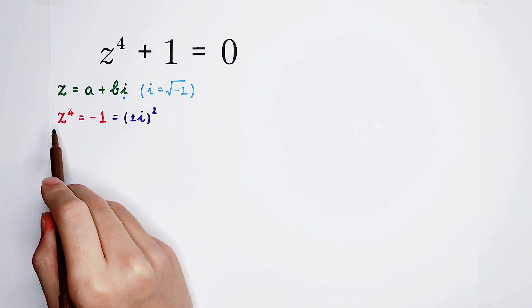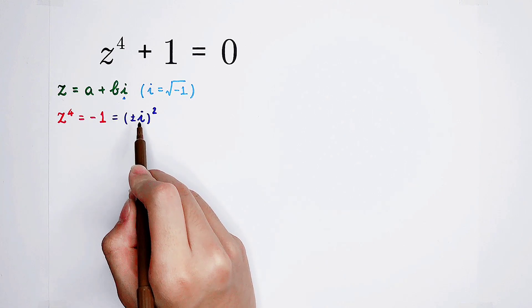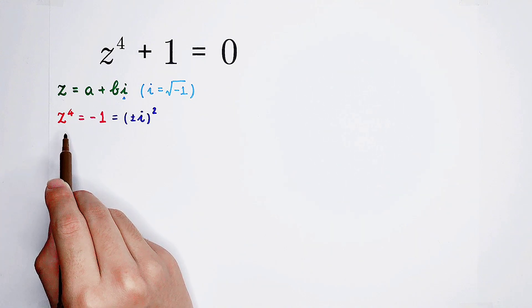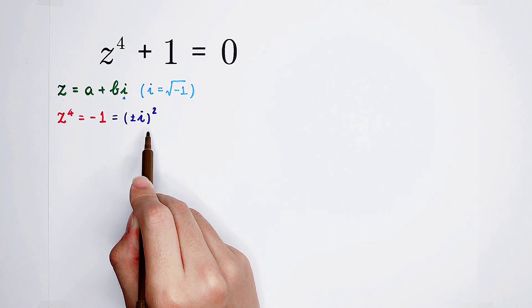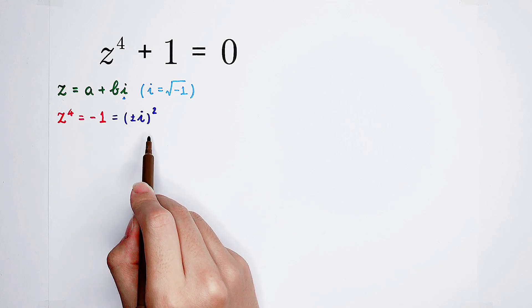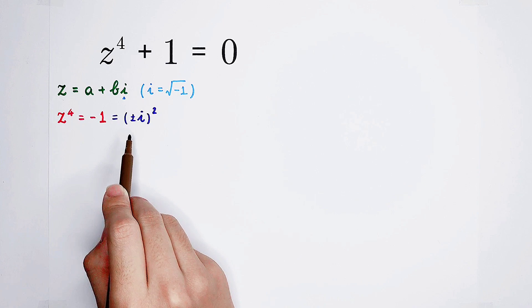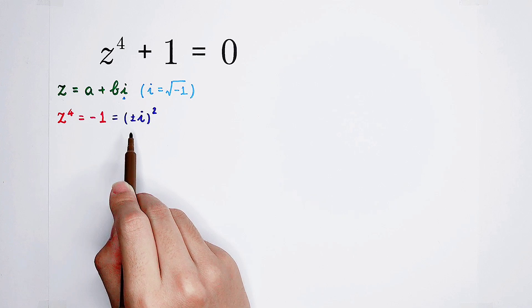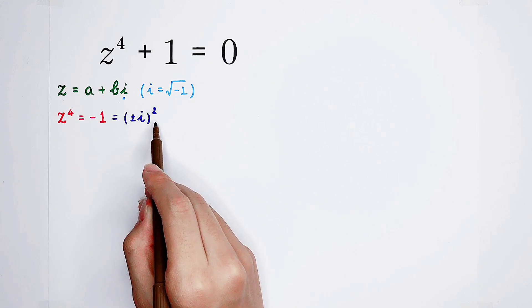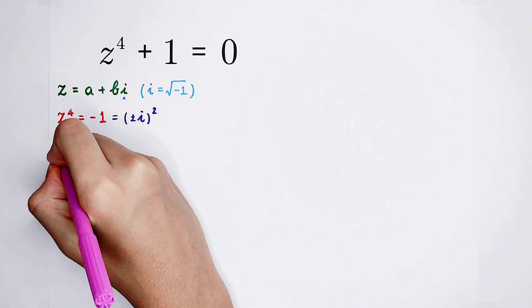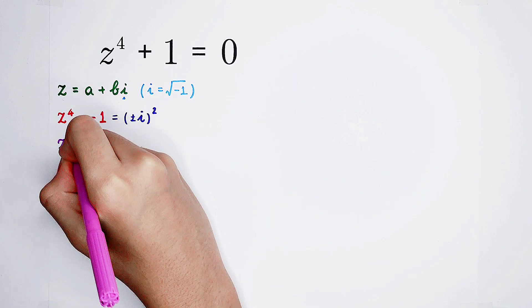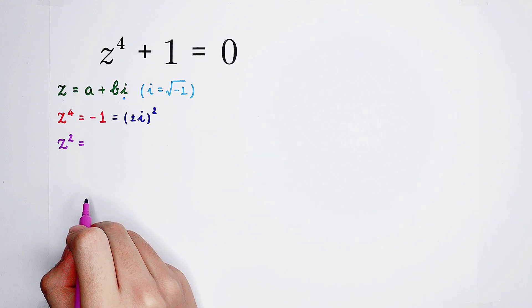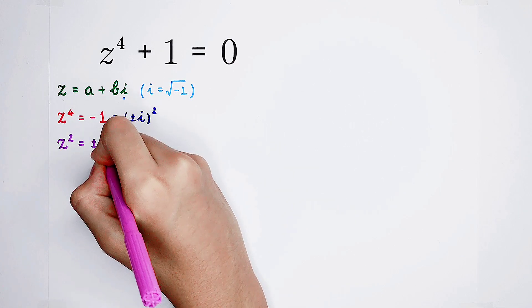The left-hand side has an even exponent, and the right-hand side also has an even exponent. So we can take a square root on both sides — or raise both sides to the power of one half. Then the left-hand side becomes z squared, and the right-hand side is positive or negative i.